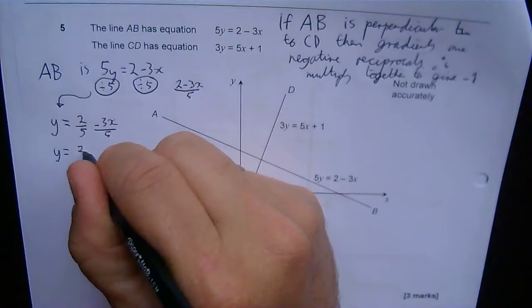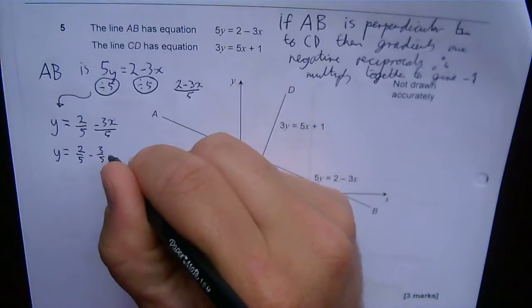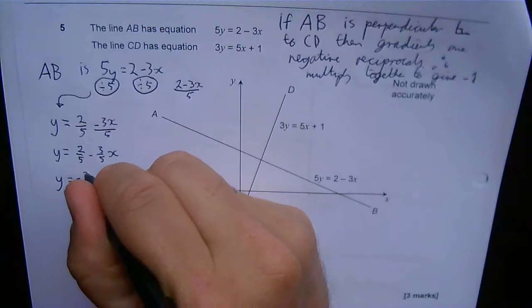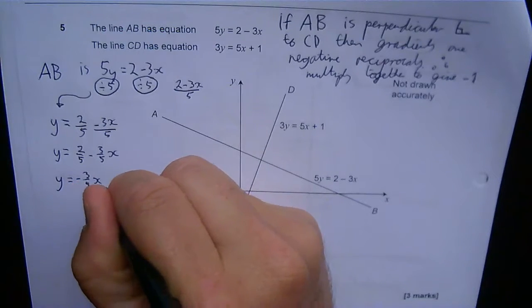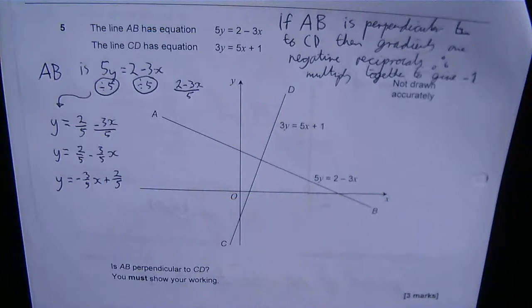So this is y = 2/5 - 3/5 x, which is also y = -3/5 x + 2/5. You have to be confident with your algebra for this rearranging, which really is the difference between grades 6, 7, 8, and 9.